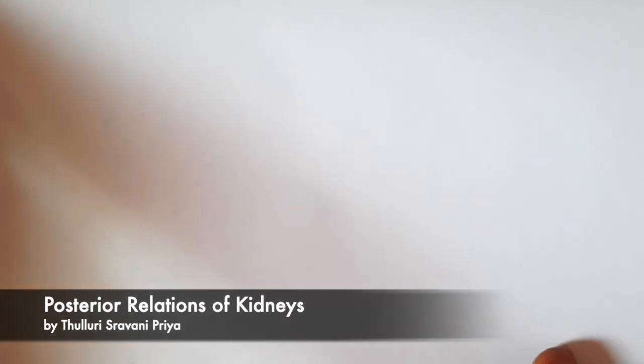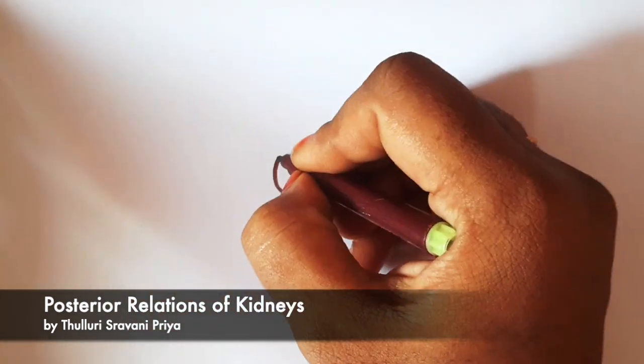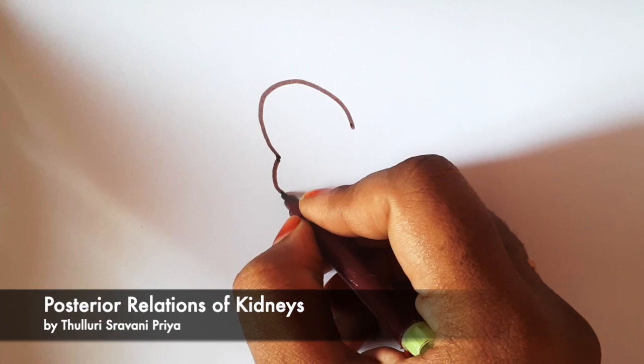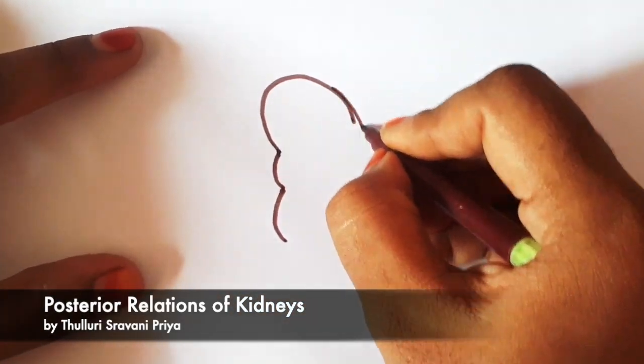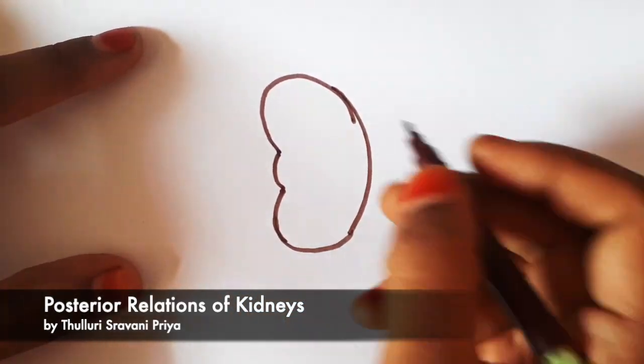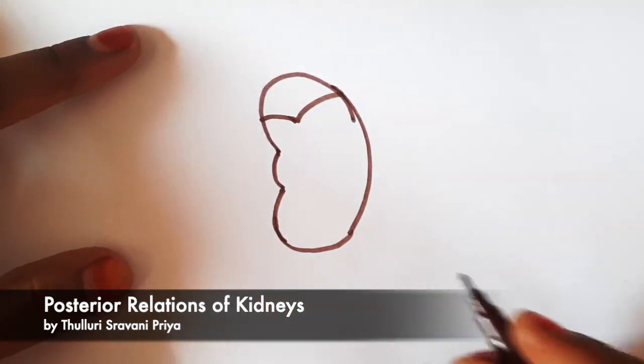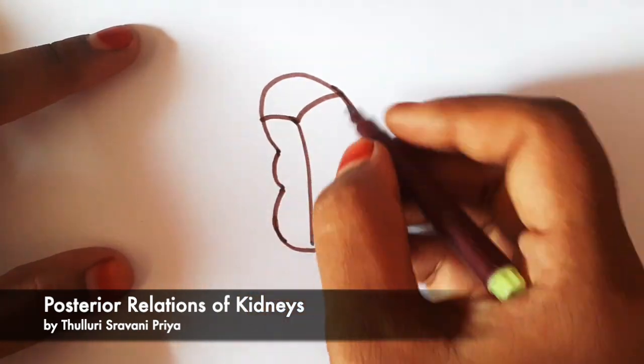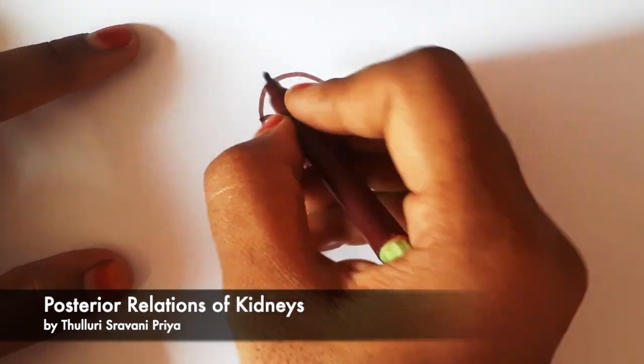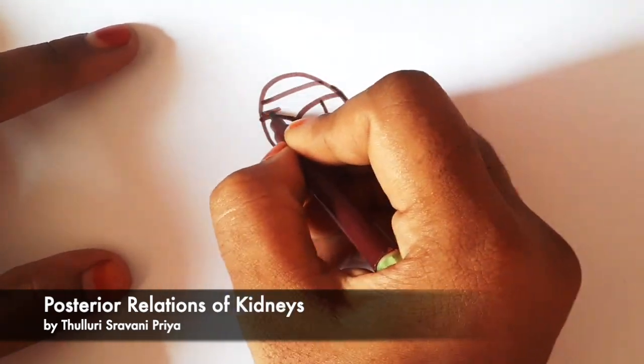In this diagram, I am showing posterior surface relations of the right kidney. This is the medial border with its upper and lower poles. And this is the lateral border. This is the medial and lateral arcuate ligaments. And these are the attachments to the muscles. And this is the 12th rib.